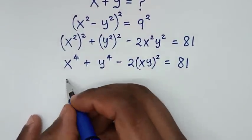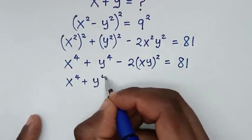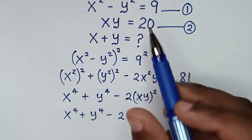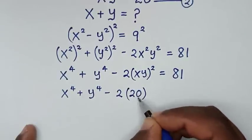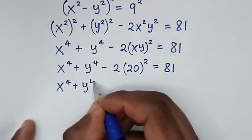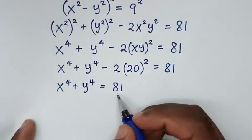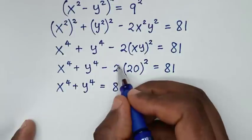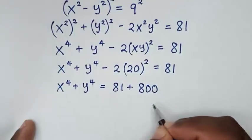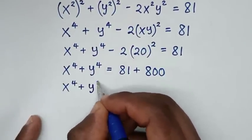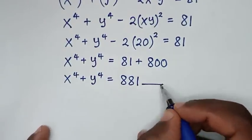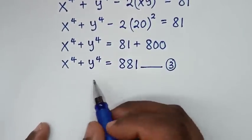Then in the next step it will be x to the power 4 plus y to the power 4, minus 2 into xy bracket squared, is equal to 81. Here xy inside the bracket is from equation 2: xy is equal to 20, so we'll substitute 20, then bracket squared is equal to 81. So 20 squared is 400, 400 times 2 is 800, so it will be negative 800. We'll take it to the other side as positive 800, so x to the power 4 plus y to the power 4 is equal to 81 plus 800, which is 881. We'll call this equation 3.